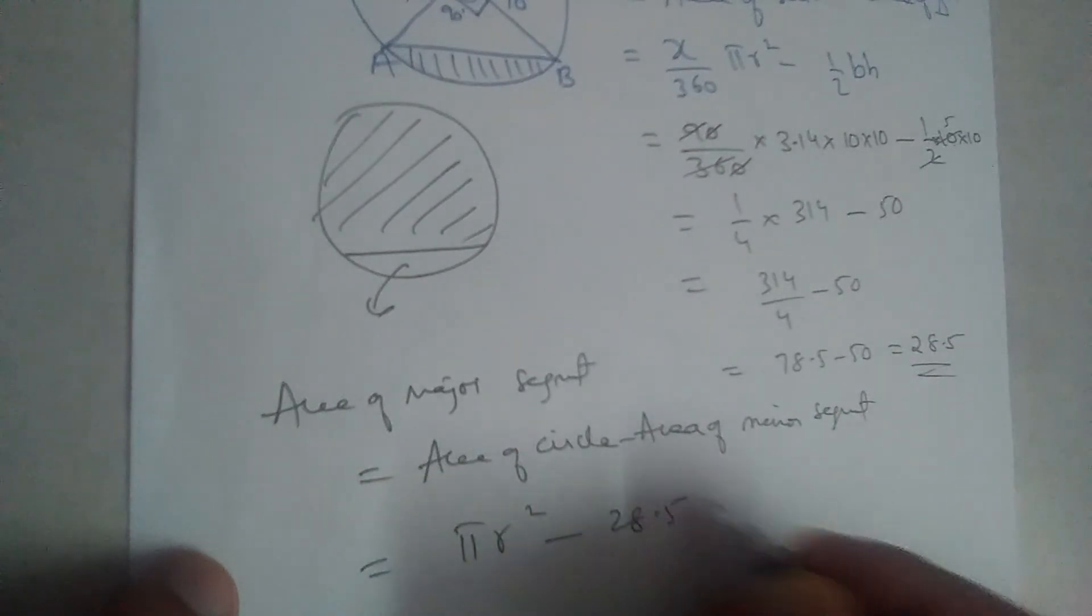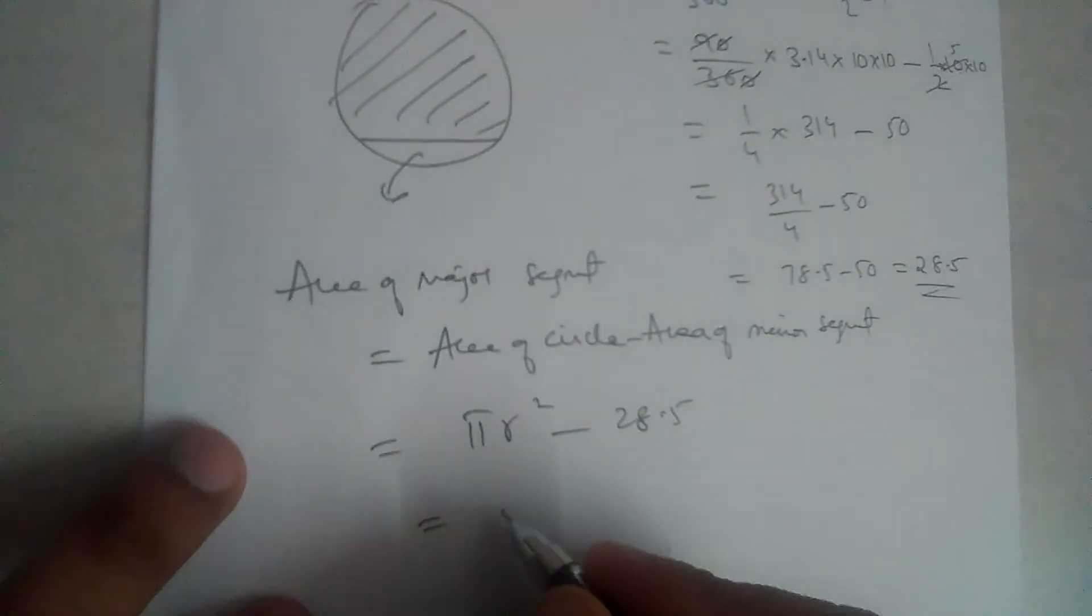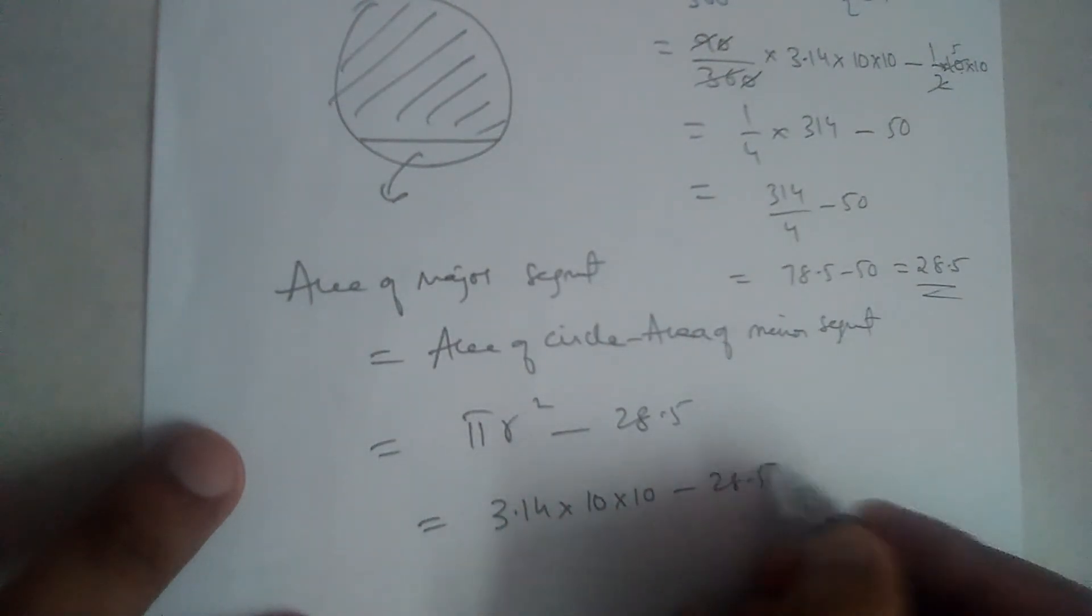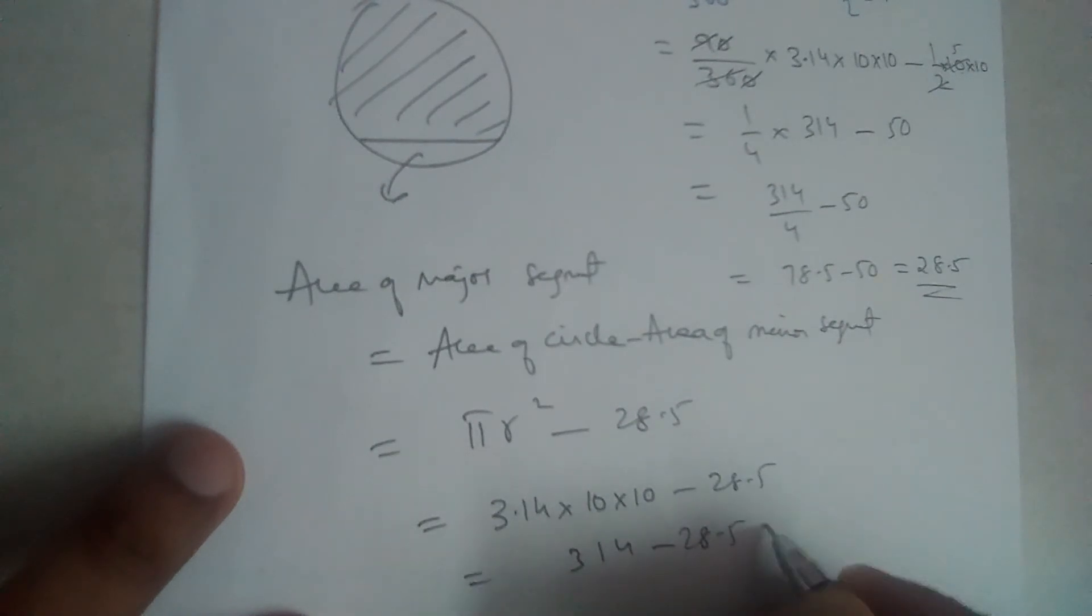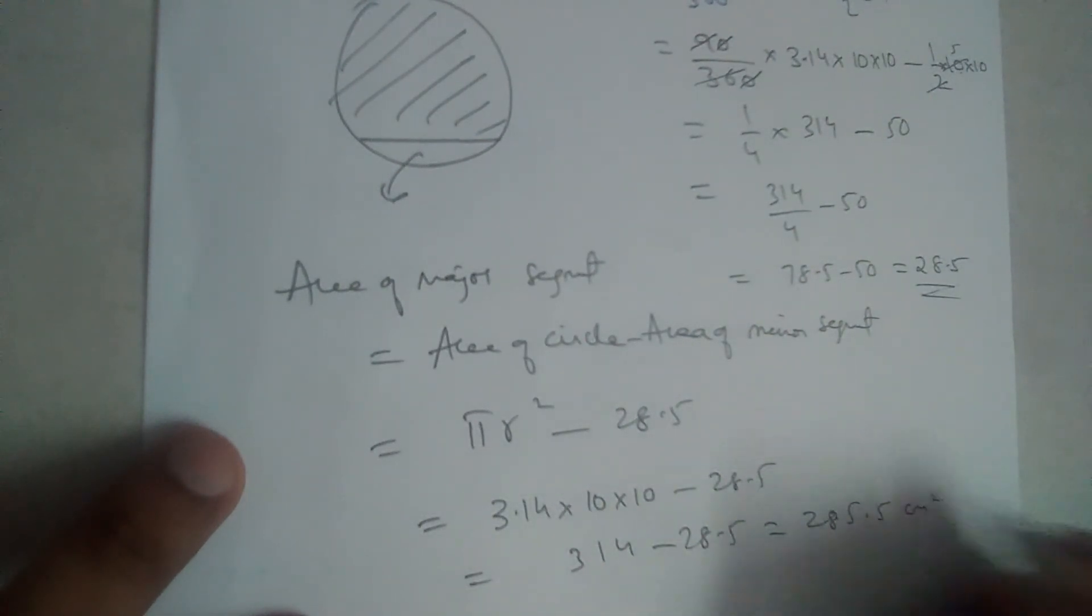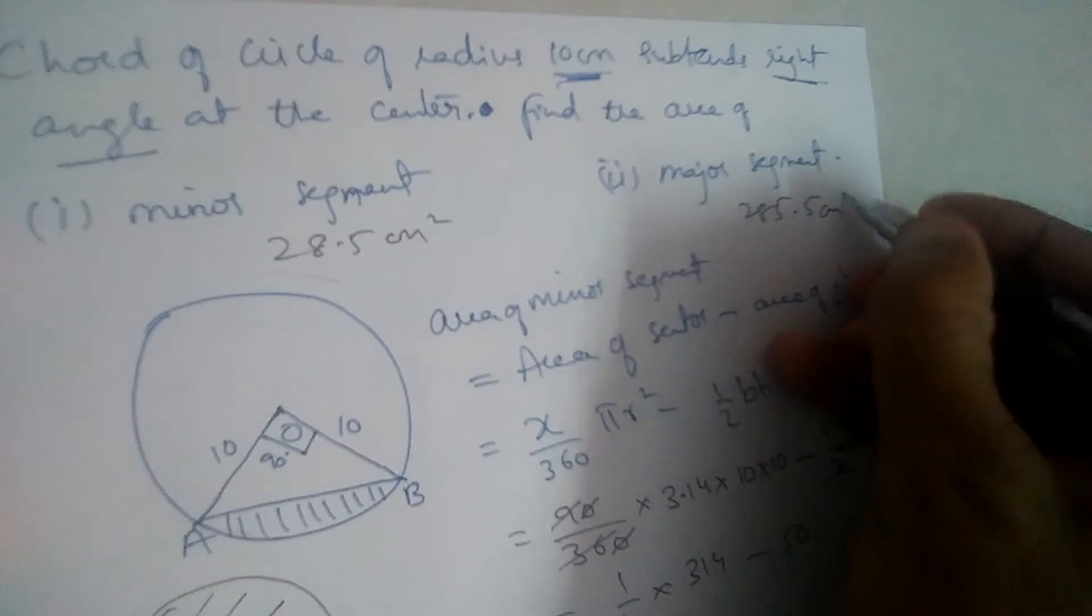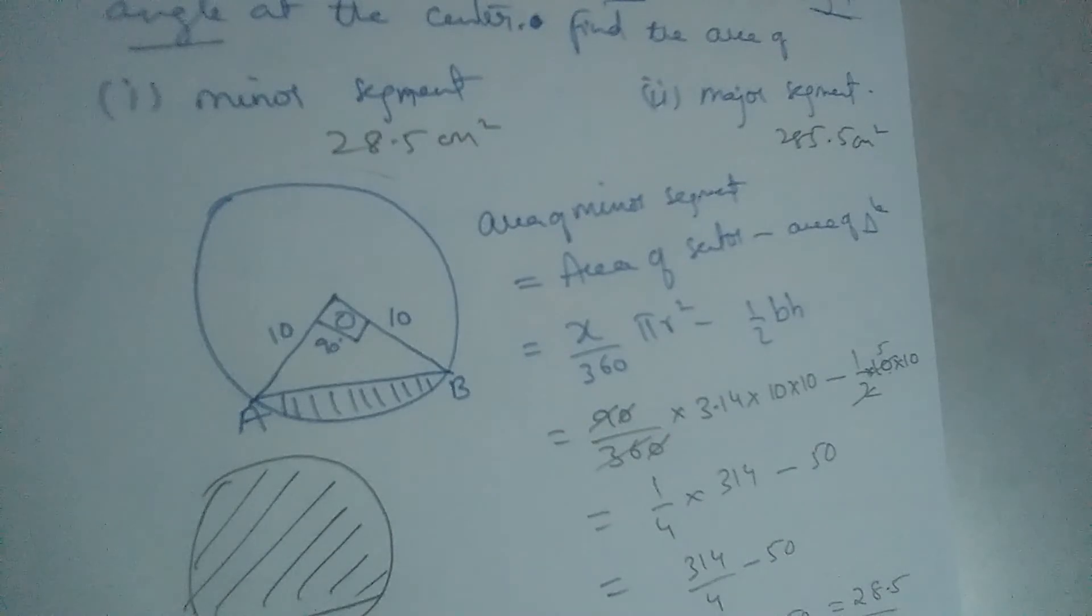We got it as 28.5. So pi r square. Pi 3.14, r is 10. So 10 into 10 minus 28.5. So this is 314 minus 28.5. This will give us 285.5 cm square. So area of major segment is 285.5 cm square.